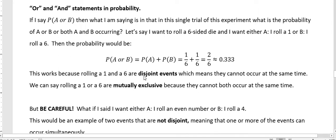This works because one in six are what we call disjoint events, which means they cannot occur at the same time. So if I'm talking about the probability of two things occurring and neither one can occur at the same time, I just have to add those two probabilities together. We can say that one in six are mutually exclusive because they cannot both occur at the same time.